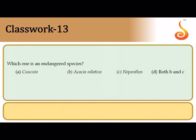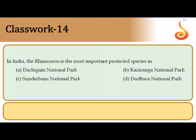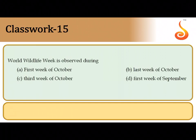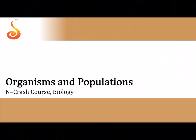The thirteenth question asks which is an endangered species. Among the options, the insectivorous pitcher plant Nepenthes khasiana, found in the northeastern Himalayas, is the endangered species. The fourteenth question: the one-horned rhinoceros, Rhinoceros unicornis, is protected in Kaziranga National Park of Assam — correct answer is the second option. World Wildlife Week is observed during the first week of October, while World Wildlife Day is on March 3rd. The correct answer is option A.